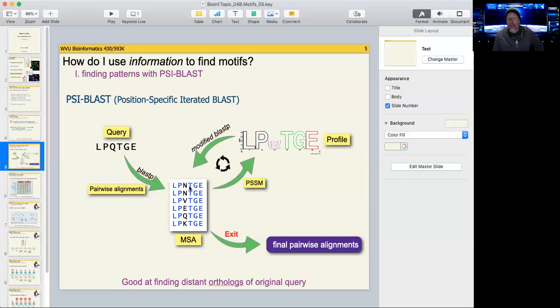If it finds additional sequences above and beyond what it used to build the multiple sequence alignment, you have the option to iterate the process. And by that I mean you can tell BLAST, PSI-BLAST, to include the new sequences,